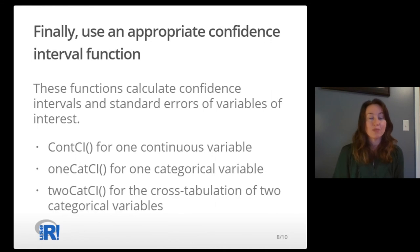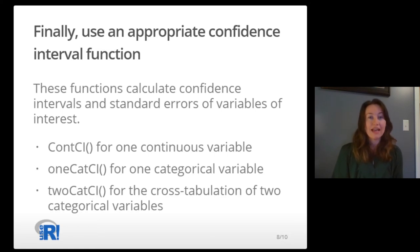Finally, use an appropriate confidence interval function. These functions calculate confidence intervals and standard errors of variables of interest. The CONCI function is used for one continuous variable. The 1CATCI function is used for one categorical variable. And the 2CATCI function is used for the cross-tabulation of two categorical variables.